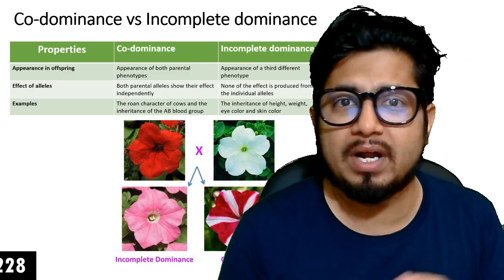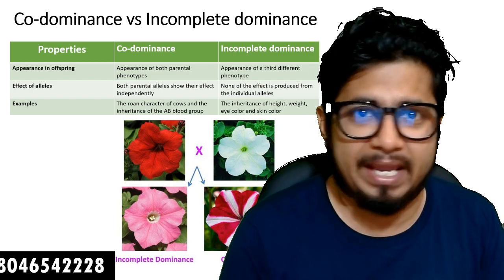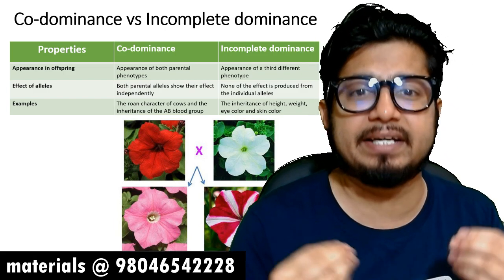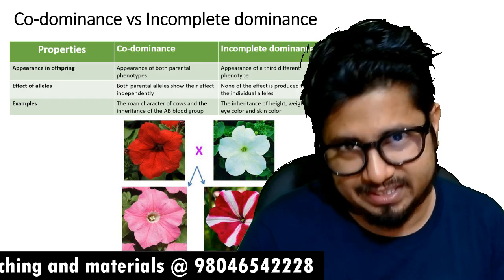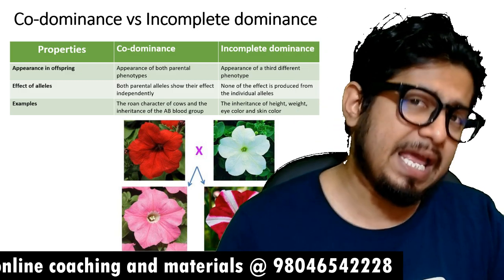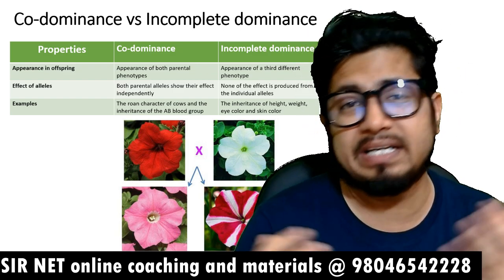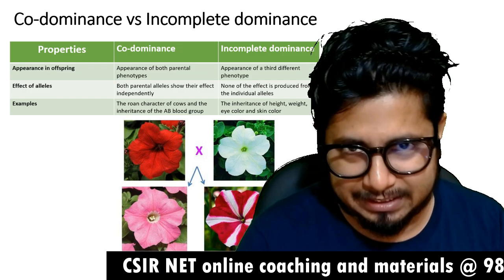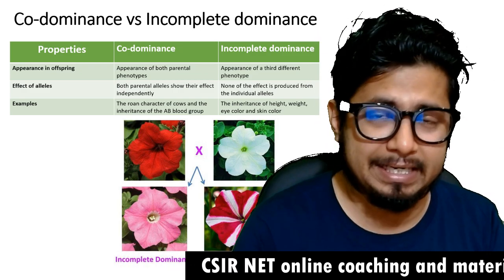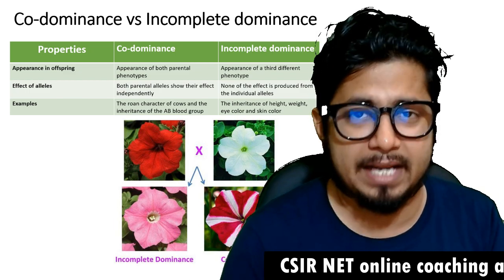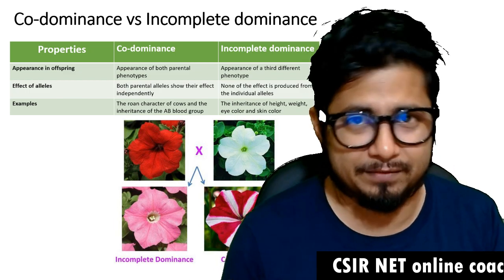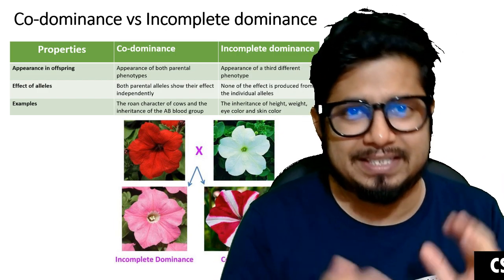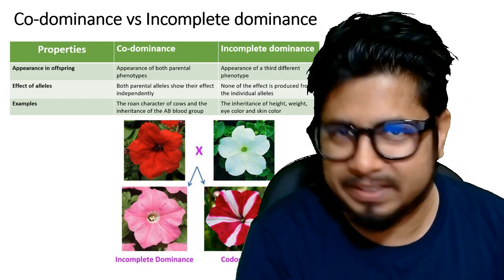Then there are examples. What are the examples of co-dominance? The roan character of cows and the inheritance of the AB blood group are both examples of co-dominance. While in incomplete dominance, the inheritance of height, weight, eye color, and skin color are examples. In many cases, incomplete dominance is regulated by multiple alleles. Like our ABO blood type, regulated by A and B alleles: presence of A and B together gives AB blood type, absence of both gives O blood type, presence of A only gives A blood type, and presence of B only gives B blood type.